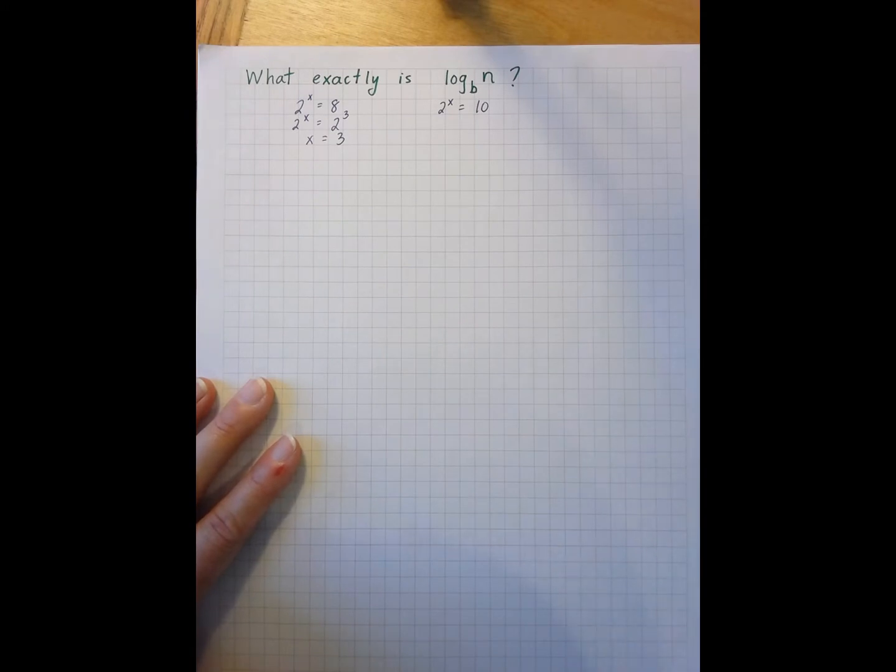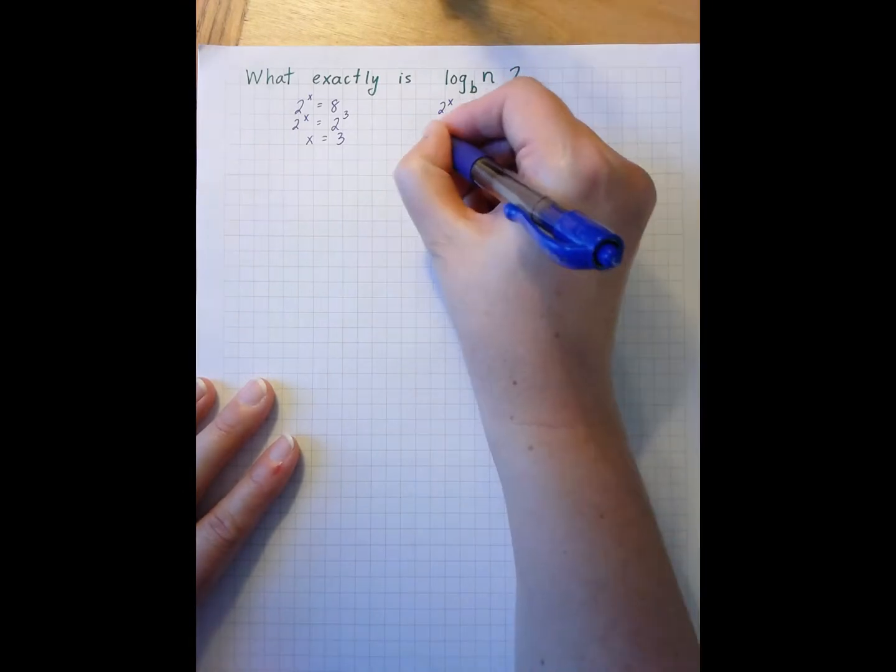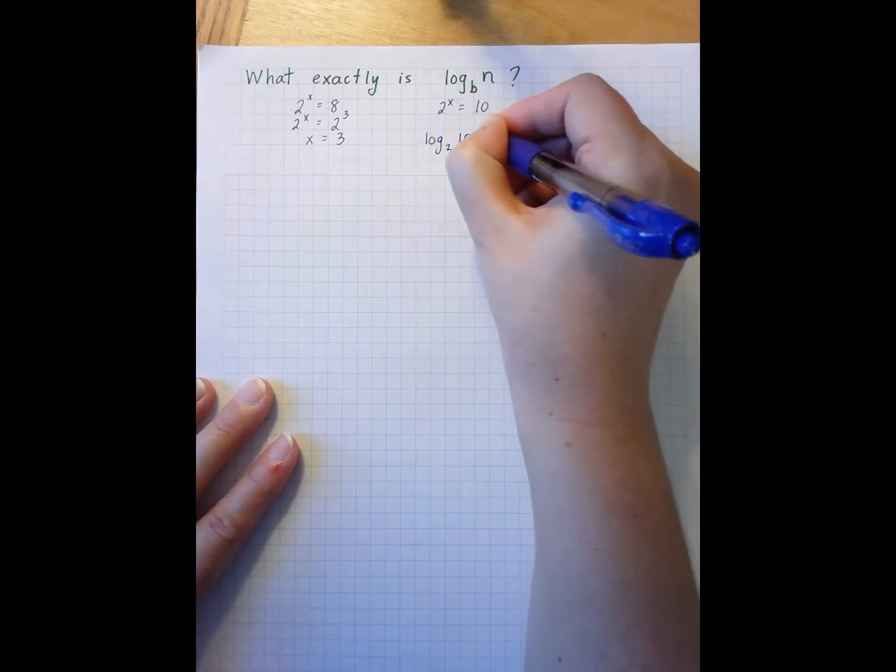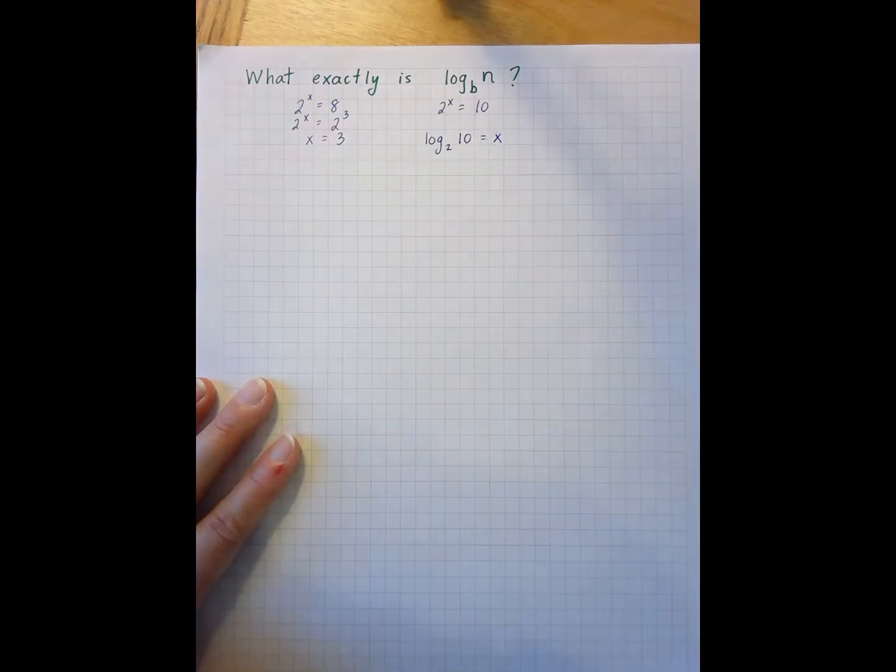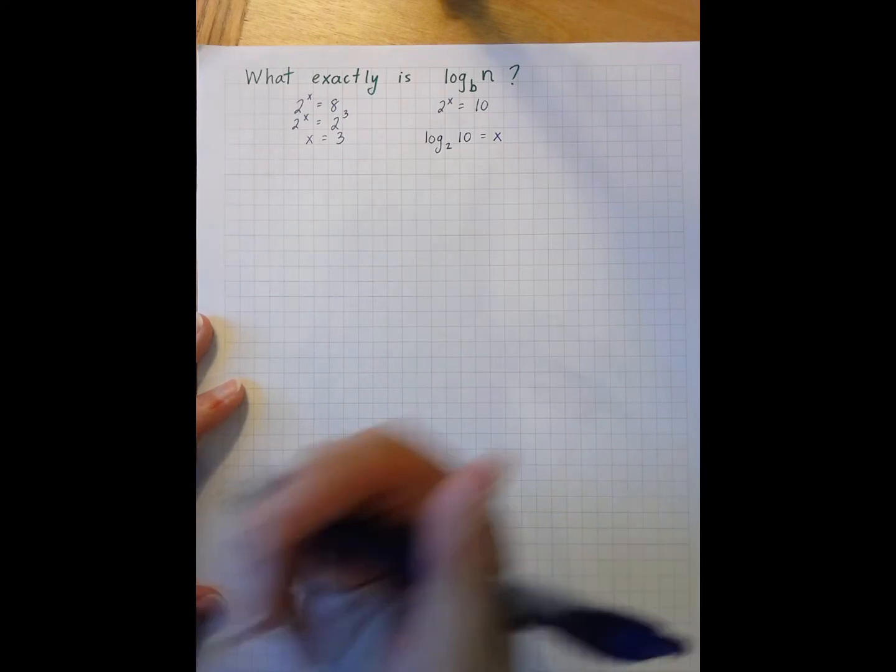So we rewrite 2 to the x equals 10 as log base 2 of 10 equals x. And part of the work we're going to do in this module is to figure out what that means, what that equals, and how it all works. So the first thing that we want to talk about is logs that represent a number that I can actually physically find on the number line.